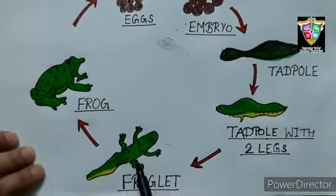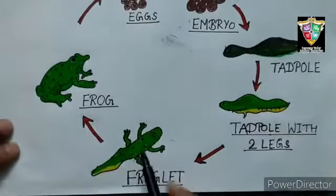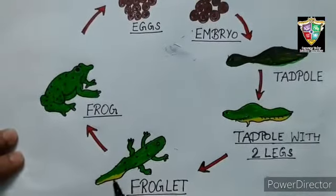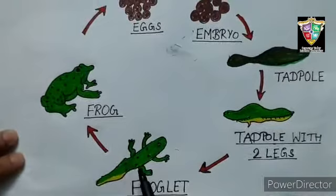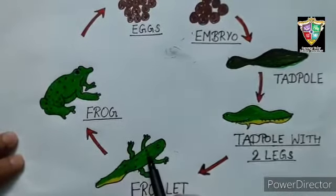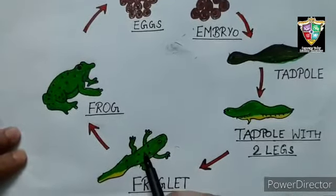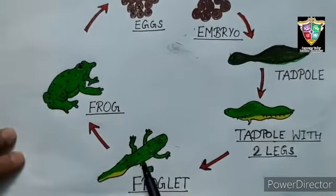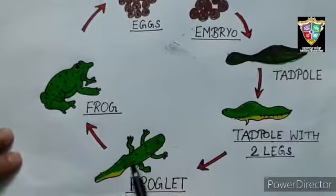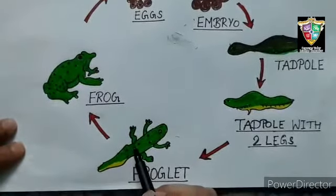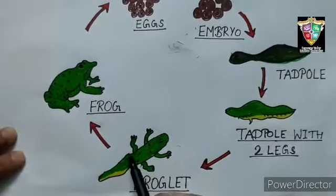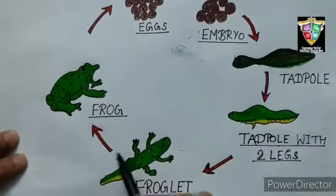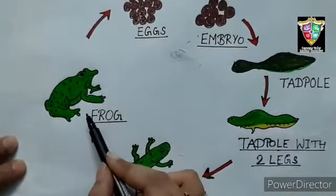Now this tadpole is called a froglet. Later, forelimbs grow and the tail shrinks. Skin is formed over the gills and the gills disappear. Lungs also develop in this froglet. At about 12 weeks of age, the froglet's gills and tail have been fully absorbed into the body. The lungs of the frog are now functional, and at this stage the froglet is called an adult frog.